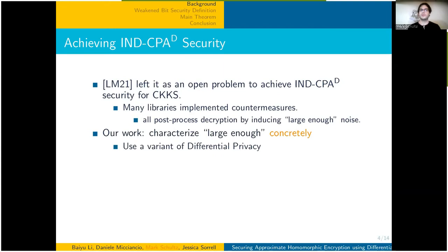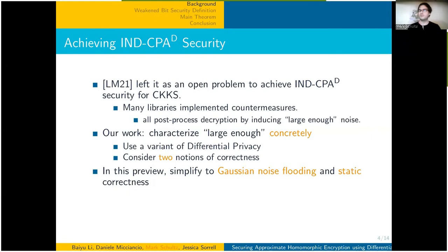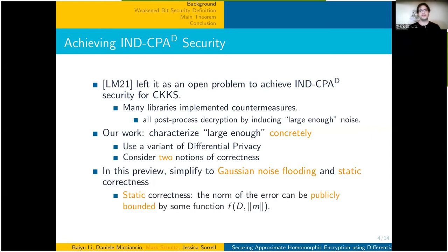In the full version of our work, we use a variant of differential privacy and consider two separate notions of correctness. In this preview, I will simplify to Gaussian noise flooding and static correctness. By static correctness, I mean that the norm of the error can be publicly bounded by some function of both the circuit to evaluate and some bound on the norm of the input.